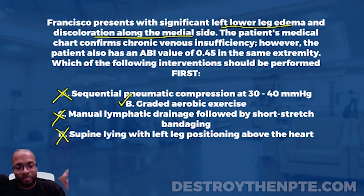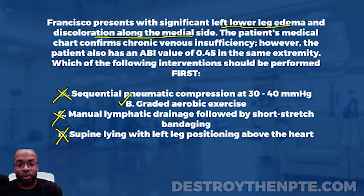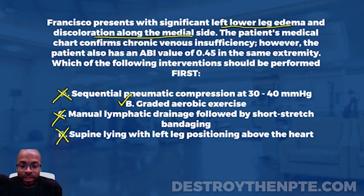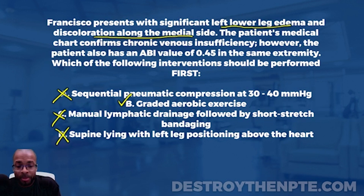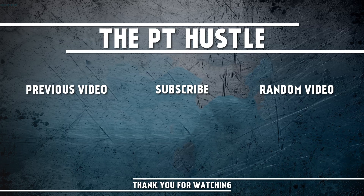That leaves us with our final answer: B — graded aerobic exercise. For those of you who got this correct, congratulations — this is not an easy one. Peripheral vascular disease, covering both venous and arterial insufficiency, comes up on the exam. You have to understand what these conditions are, what the tests are, how to differentiate them, what the wounds look like, and most importantly, what the best interventions are for each.